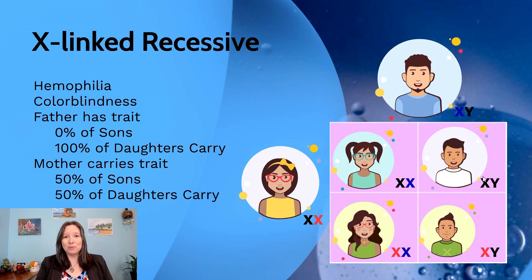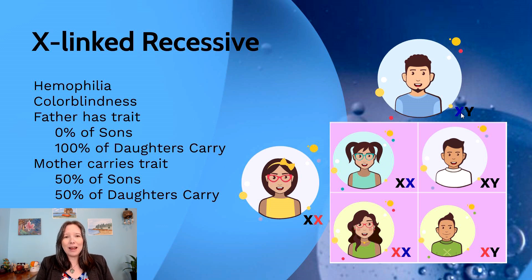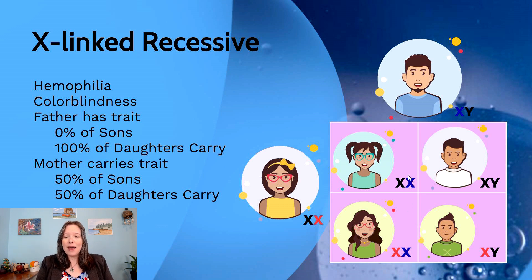Now let's look at X-linked recessive traits, which can be more complicated. Examples include early baldness, hemophilia, and many types of colorblindness. If a dad has one X impacted with an X-linked recessive trait — say colorblindness — because he only has one X, he will manifest colorblindness in his phenotype. For 100% of his sons, he passes along the Y, so he doesn't pass the trait to any of his sons. For both of his daughters, he passes along the affected X. However, because this is an X-linked recessive trait, his daughters have two X chromosomes, so they do not necessarily manifest colorblindness — rather, they become carriers of this trait, since they only have one X coding for colorblindness.